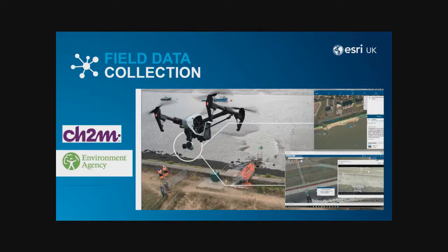Field data collection — many organisations have mobile workforces, and having the ability to get accurate and timely information both into and out of the field not only creates empowered and informed workforces, but it also streamlines workflows and reduces operating costs. Thames Estuary Asset Management 2100 is a project run by the Environment Agency in conjunction with CH2M Hill. They're responsible for the UK's largest flood defence programme, including 350 kilometres of defences and the Thames Barrier. They've halved the time to assess conditions by moving away from paper-based approaches to using Collector and drone maps to capture videos, photos and other information that can be uploaded and shared for quicker dissemination.